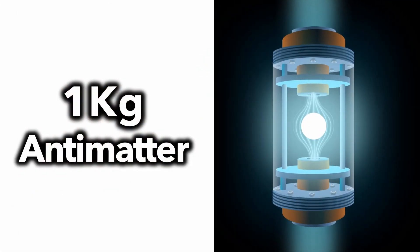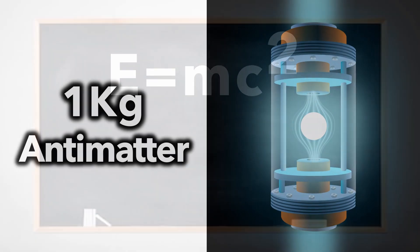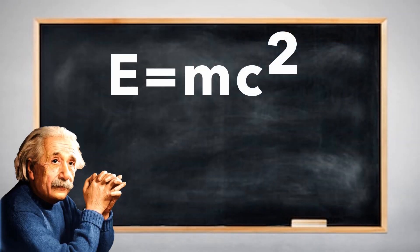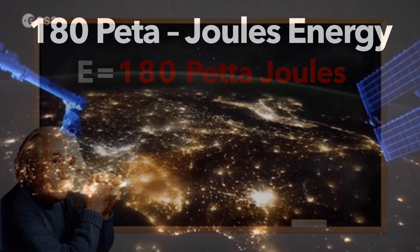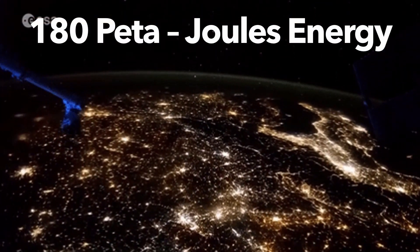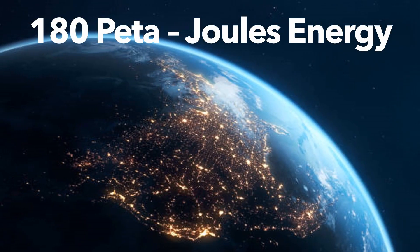But antimatter is the ultimate rocket fuel. According to E equals mc squared, one kilogram of antimatter releases 180 petajoules of energy, enough to power the whole Earth for an entire day.